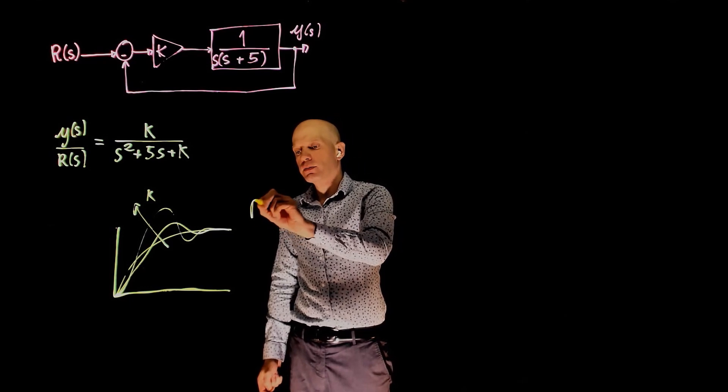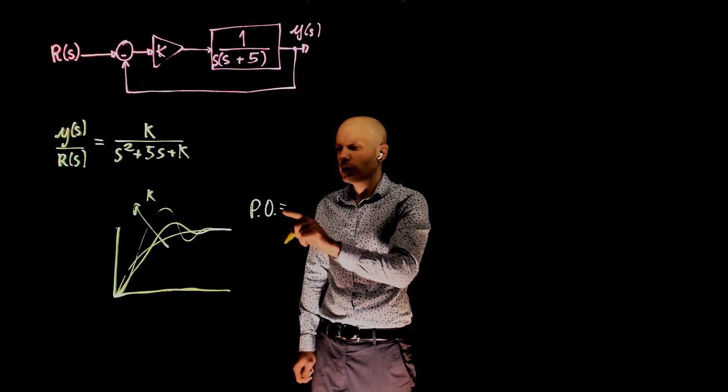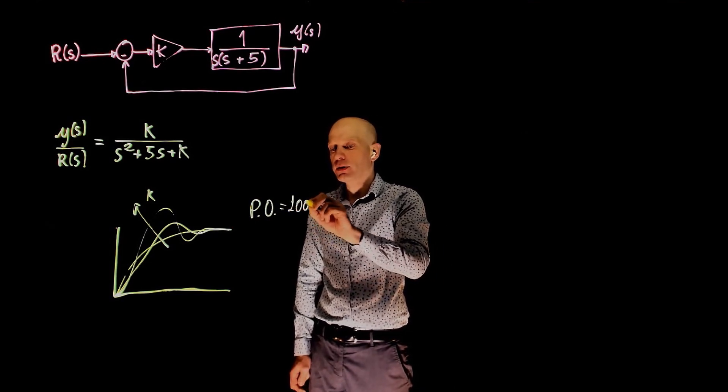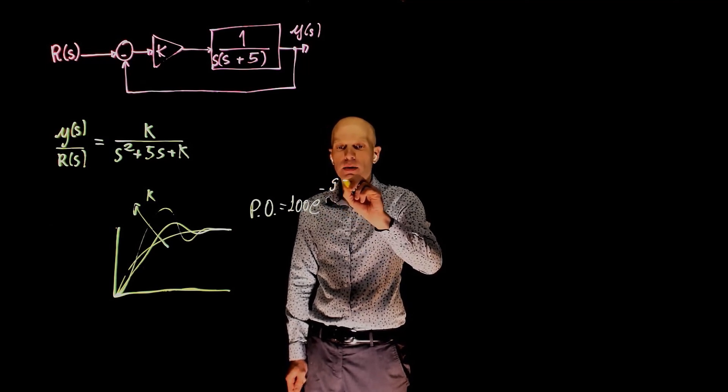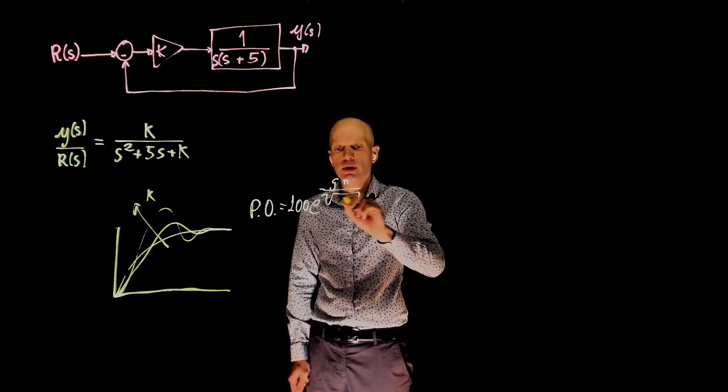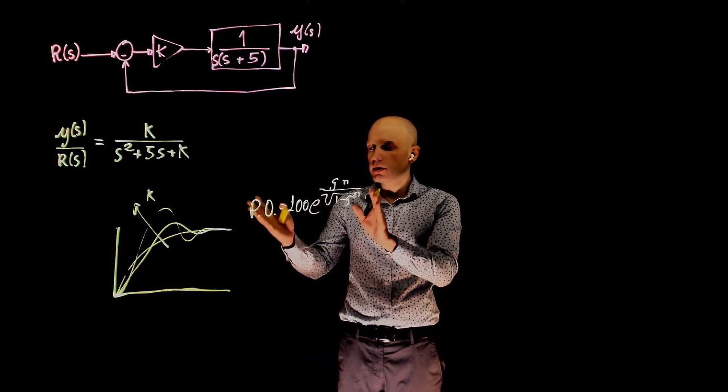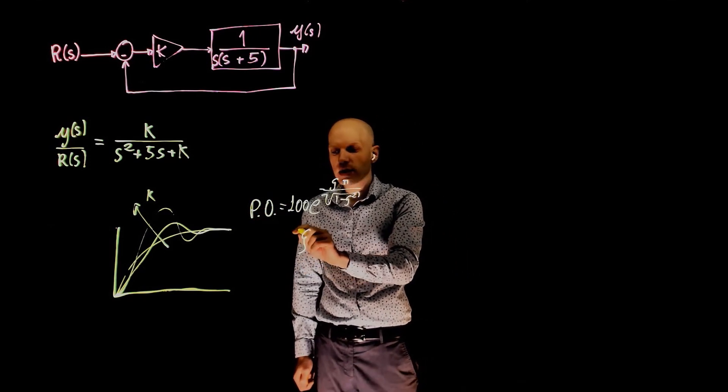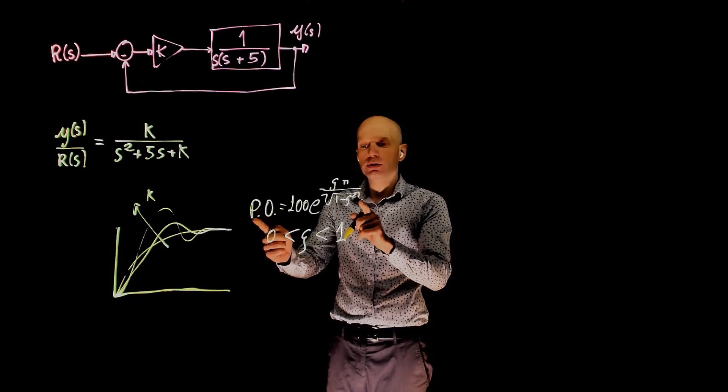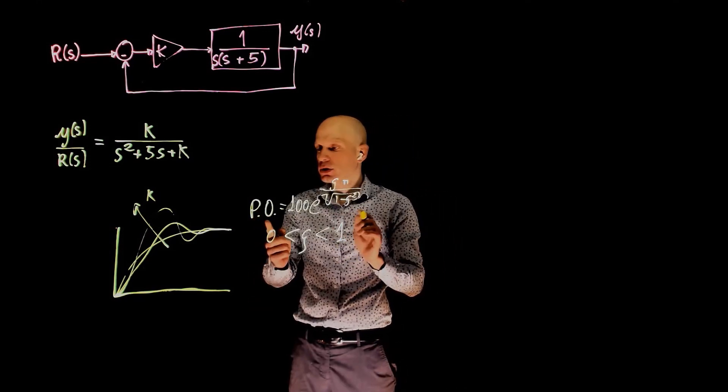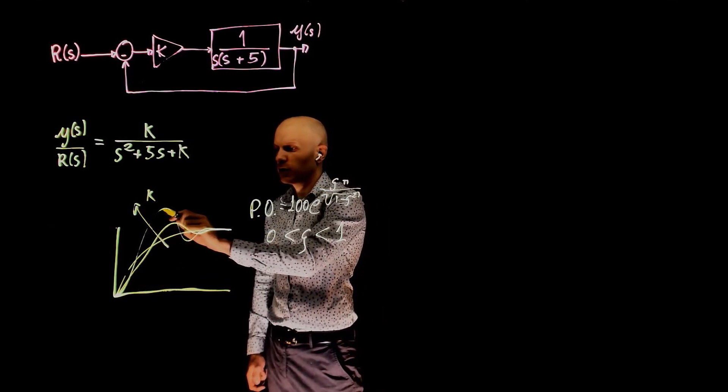A recurrent mistake that I see is trying to find this value of k by simply setting the percent overshoot to 0. The percent overshoot that we found to be 100 times the exponential of minus zeta pi over square root of 1 minus zeta squared. This doesn't work because this expression here is only valid when zeta is between 0 and less than 1. So this expression, if you remember from the lecture, was derived for sinusoidal and exponential curves, so these two curves that you see here.